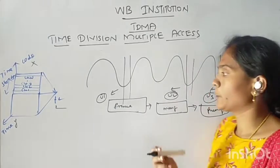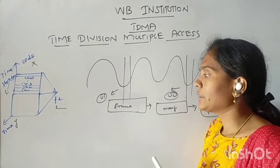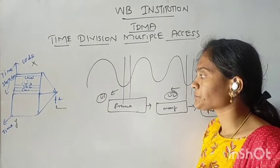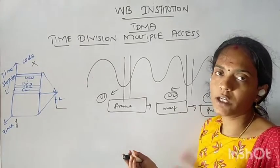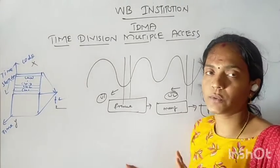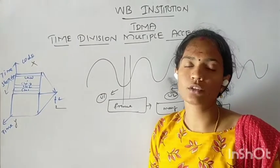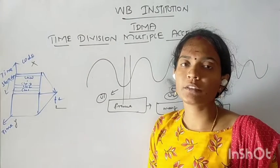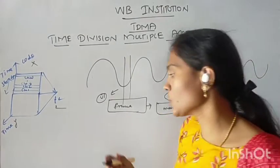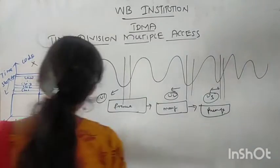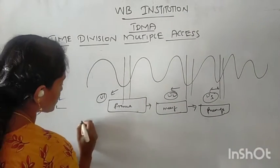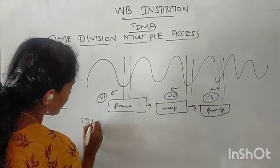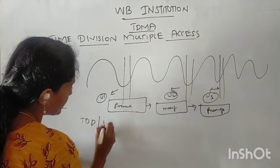The buffer method is used in TDMA. And TDMA supports duplexing. What is the duplexing process? One is TDD and FDD.